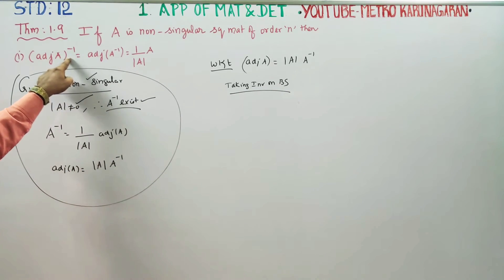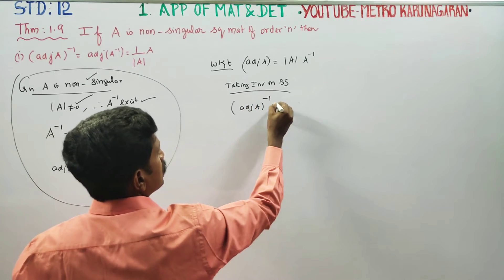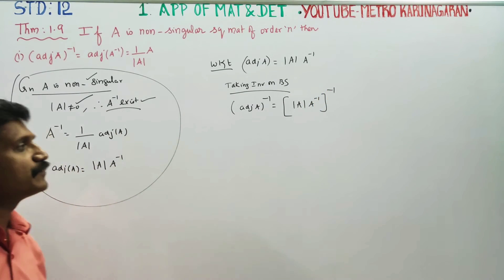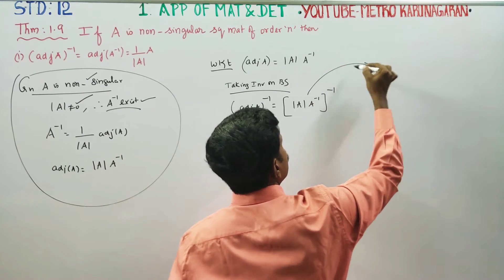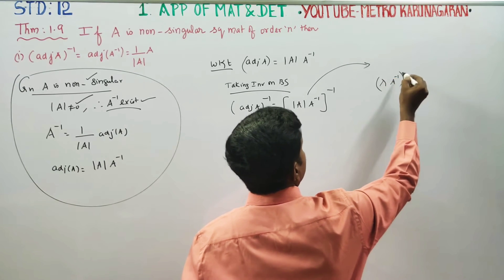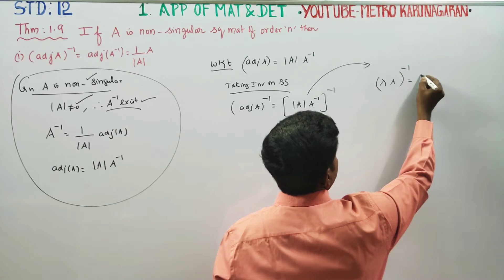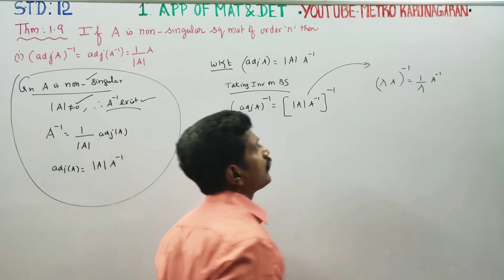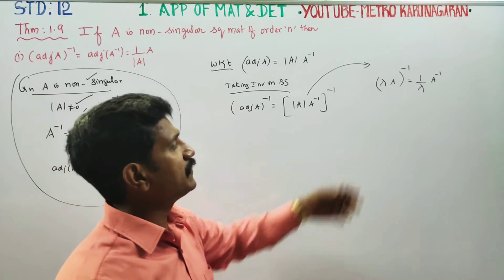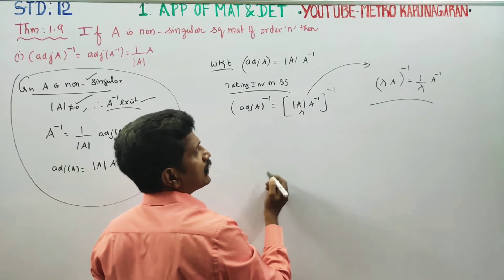Because A inverse is not equal to 0, taking inverse on both sides: adjoint A whole power minus 1 is equal to determinant A into A inverse, whole power minus 1. There is a well-known theorem: lambda into A, whole inverse, is equal to 1 by lambda into A inverse. We use Theorem 1.4 here.